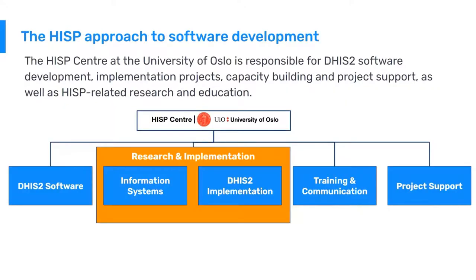The HISP center at the University of Oslo is responsible for DHIS2 software development, implementation projects, capacity building, project support, and related research and education. The center is organized around five groups: the software development team, two groups under research and implementation focusing on information systems research and DHIS2 implementation research, the training and communications team, and project support.